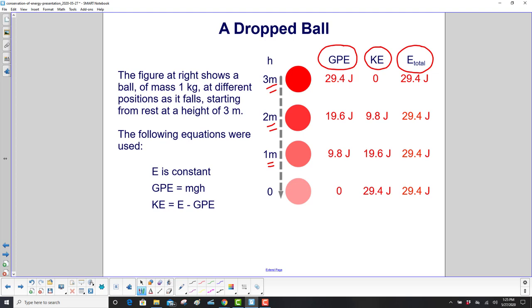So we need to calculate the GPE because that's all the data we have right now. So GPE is mgh. When you multiply one kilogram times three meters times 9.8 meters per second squared, you get 29.4 joules.